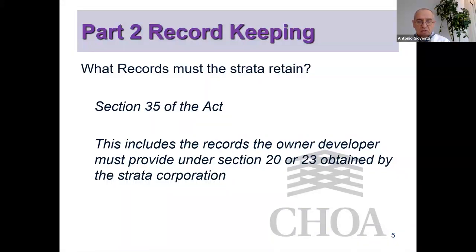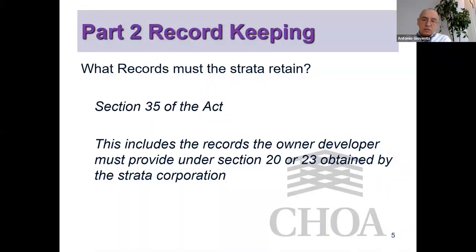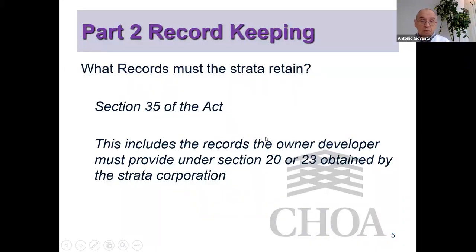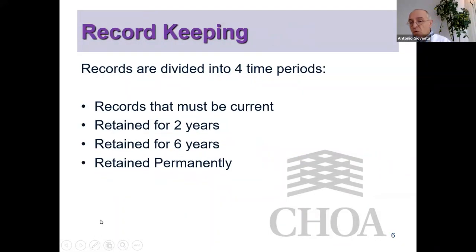This includes records that the owner developer must provide under Section 20 or 23 of the Act. This is not a new provision — it has always been an obligation of the owner developer to provide things like prints, plans, drawings, contracts, descriptions of property components, and warranties. Record keeping is divided into four time periods: records that must be current, those retained for two years, those retained for six years, and those retained perpetually.